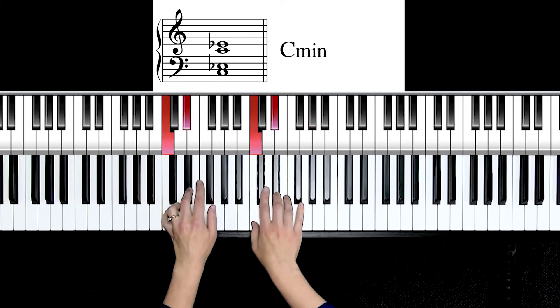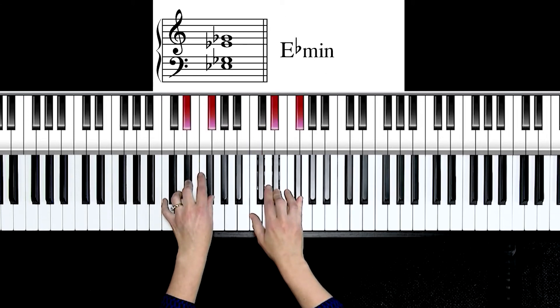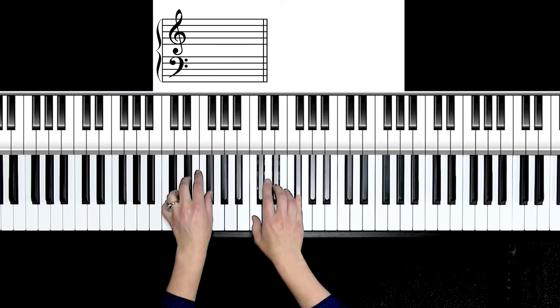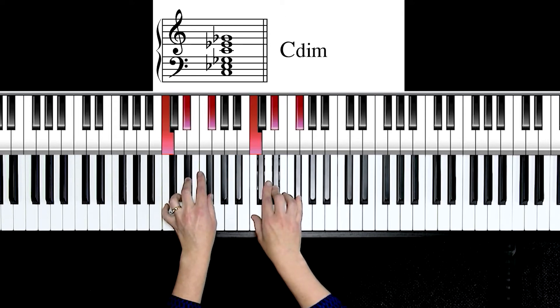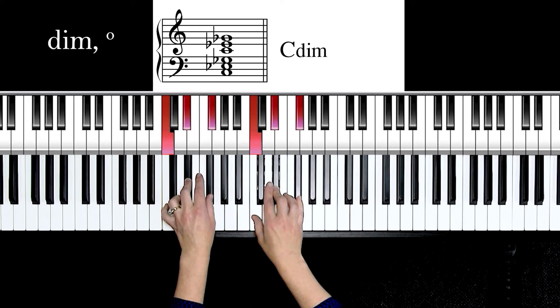The thirds are two minor thirds, which are built up with three and three half steps. So think three plus three. You will see that written as dim or a degree sign, a little circle for classical and pop notation.